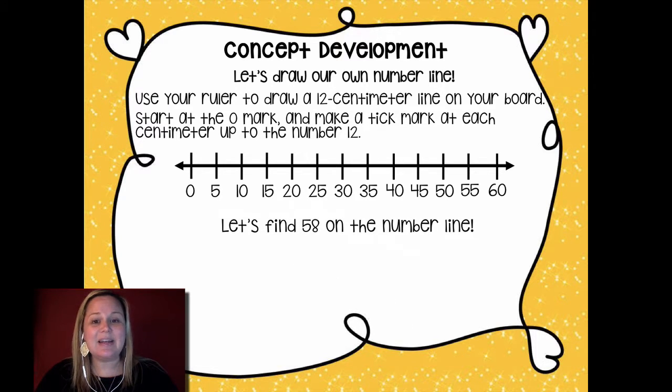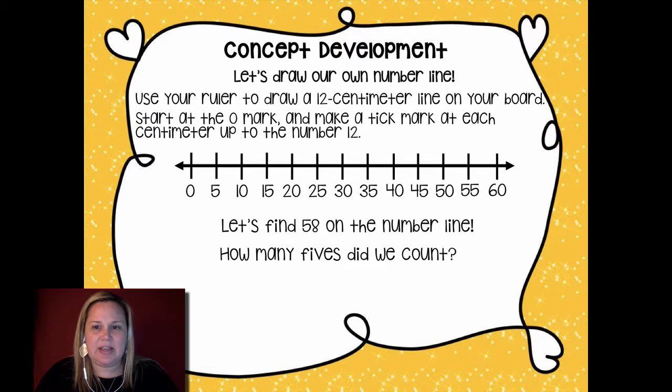So we want to find the number 58 on the number line. And to do that, we're going to count by fives until we get to 58. So we could start here, zero, five, 10, 15, 20, 25, 30, 35, 40, 45, 50, 55, right? So how many fives did we just count to get to 55? Because I can't get to 58 because there's no 58 on my number line. So I stopped at 55 because that's as close as I can get. And 60 is too far. So we counted one, two, three, four, five, six, seven, eight, nine, 10, 11. We counted 11 fives.